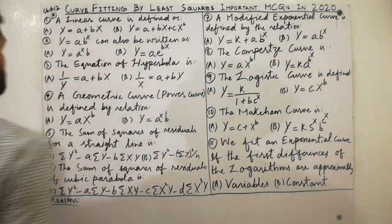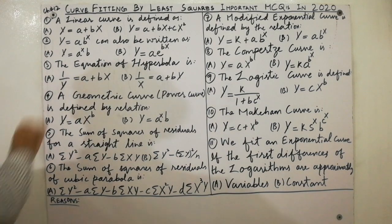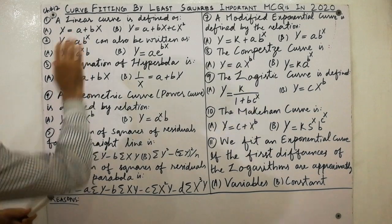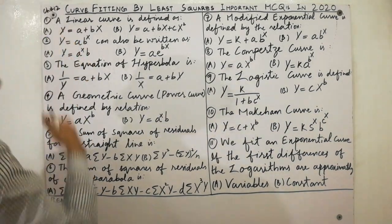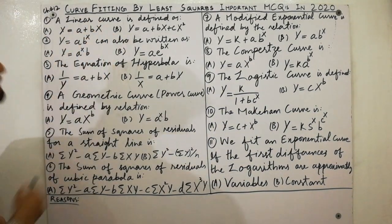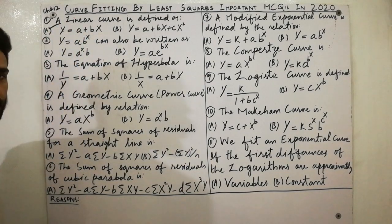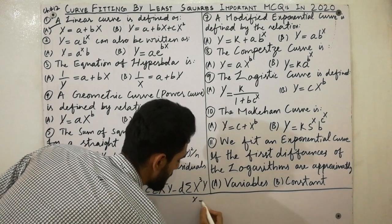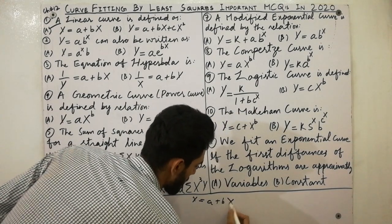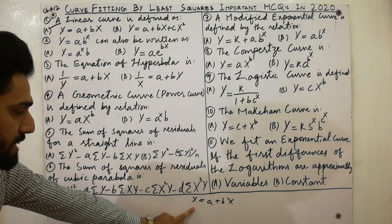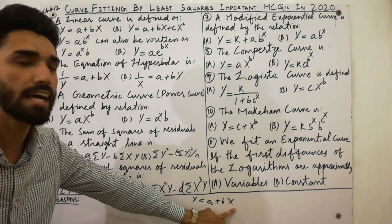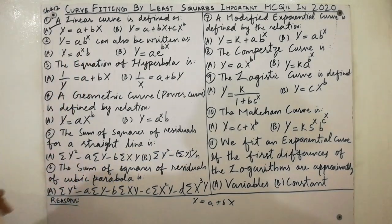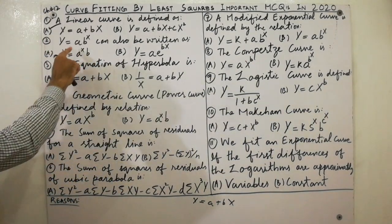Let's start the lecture. The first MCQ: a linear curve is defined as a curve with degree 1. You can see that y is equal to a plus bx. Here y is called the dependent variable and x is called the independent variable. This is also called the regression line.